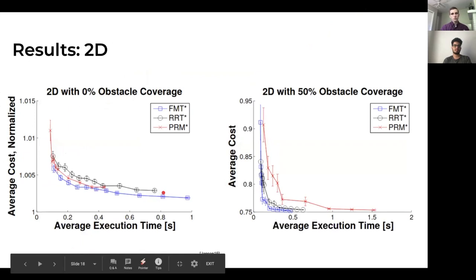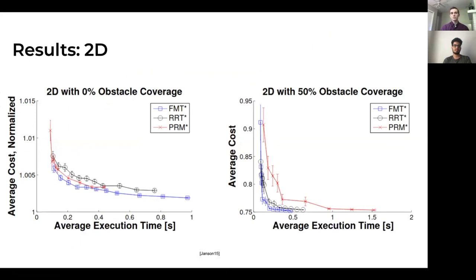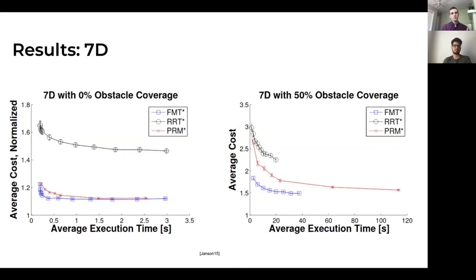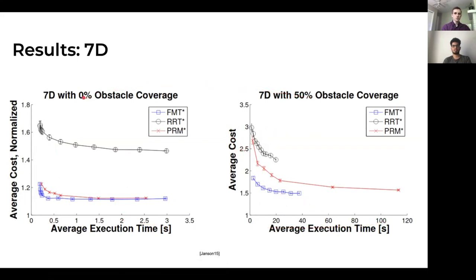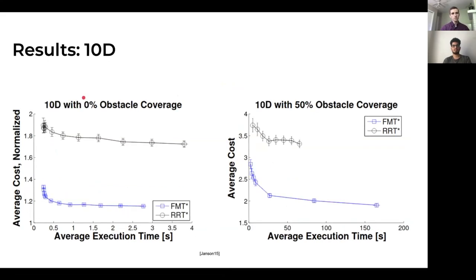In two dimensions, FMT* performs very similarly to RRT* and PRM*. Where it really shines is as you increase the number of dimensions. In 7D, comparing average cost versus execution time with 50% obstacles versus zero obstacles, the difference becomes clear. In 10 dimensions, PRM* couldn't even find a solution because it took too long, whereas FMT* is much faster than RRT* and finds better solutions quicker.